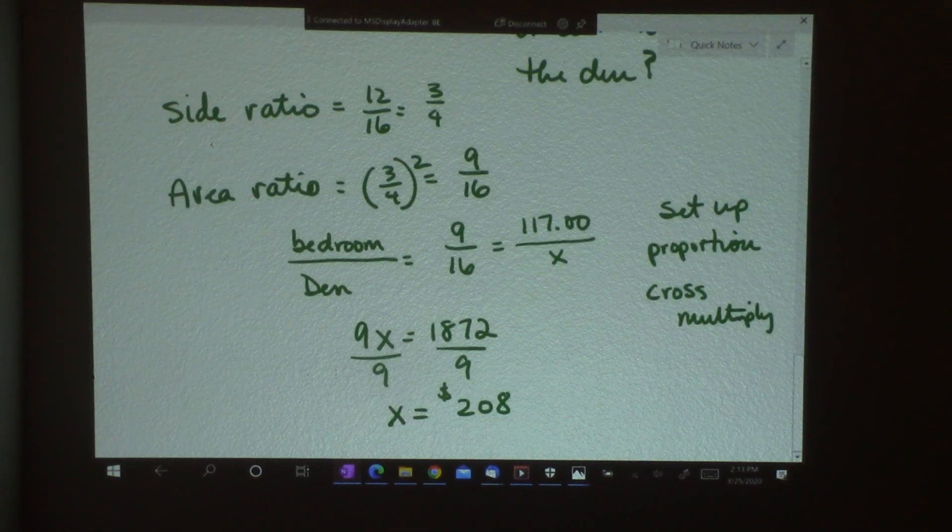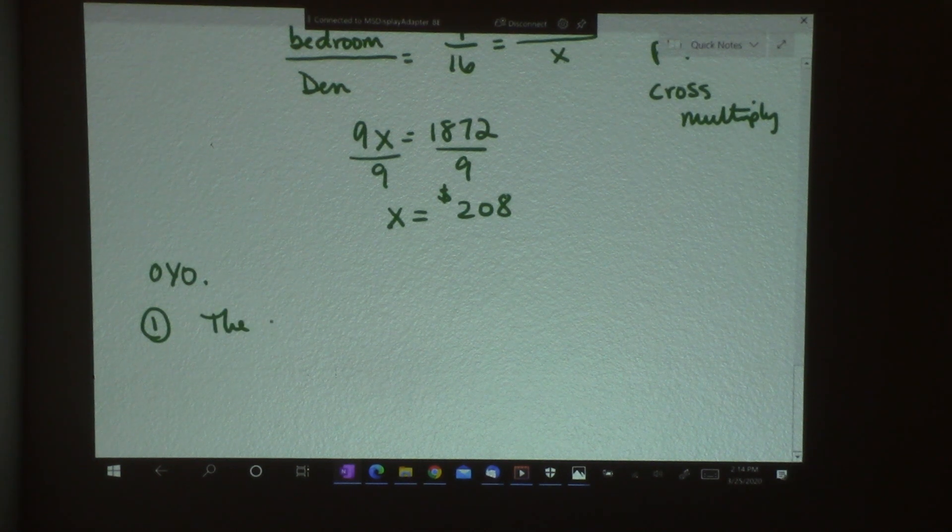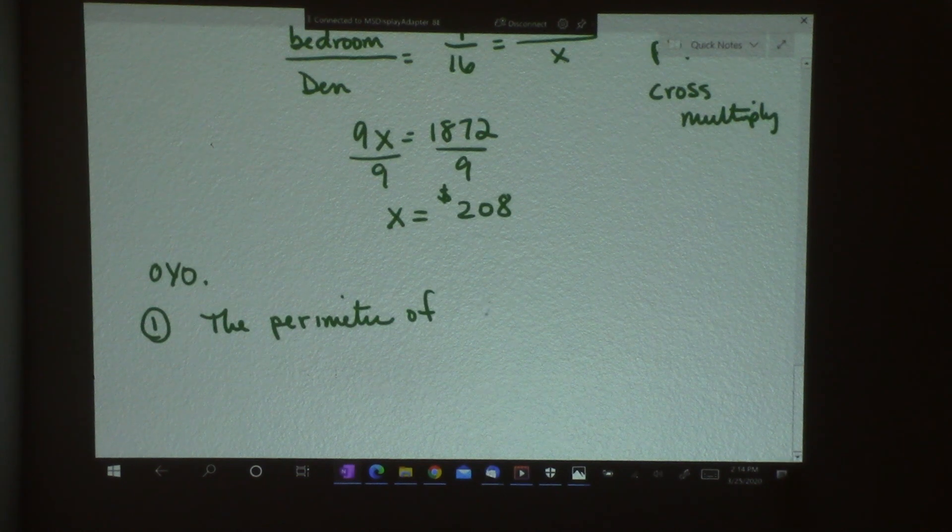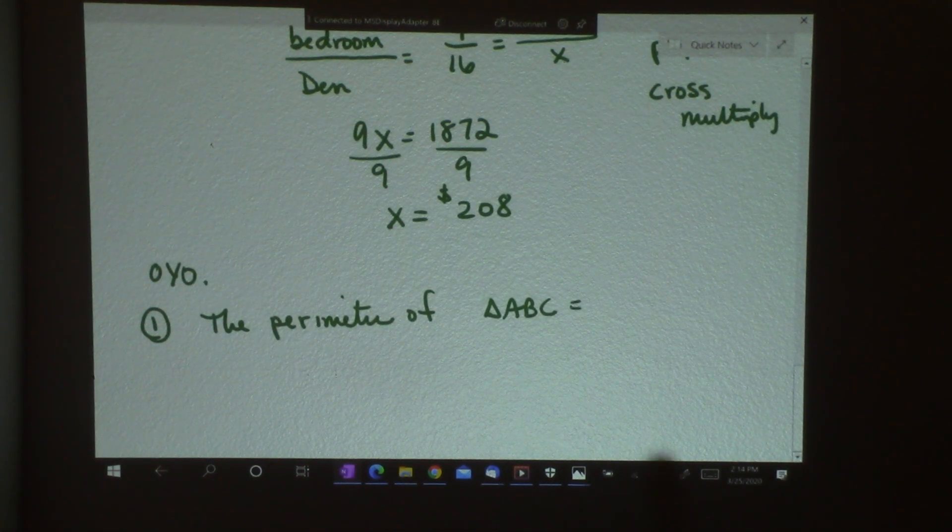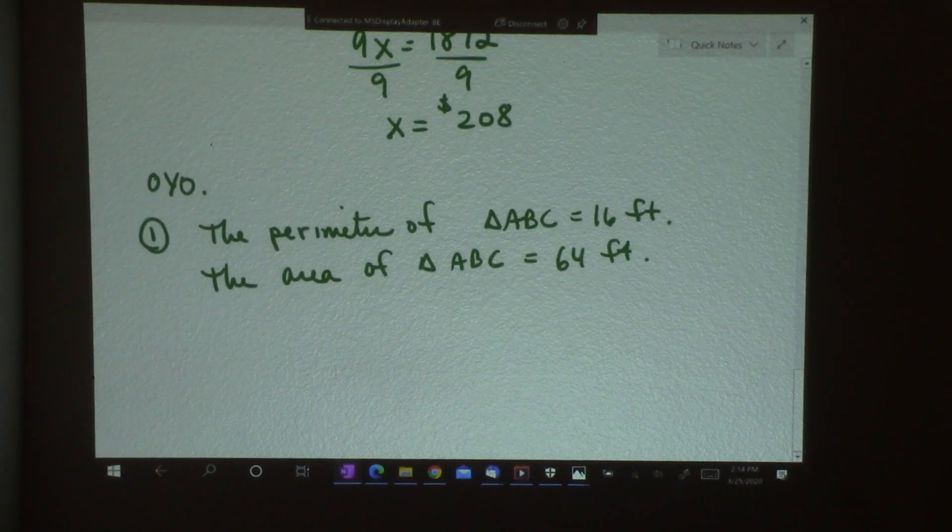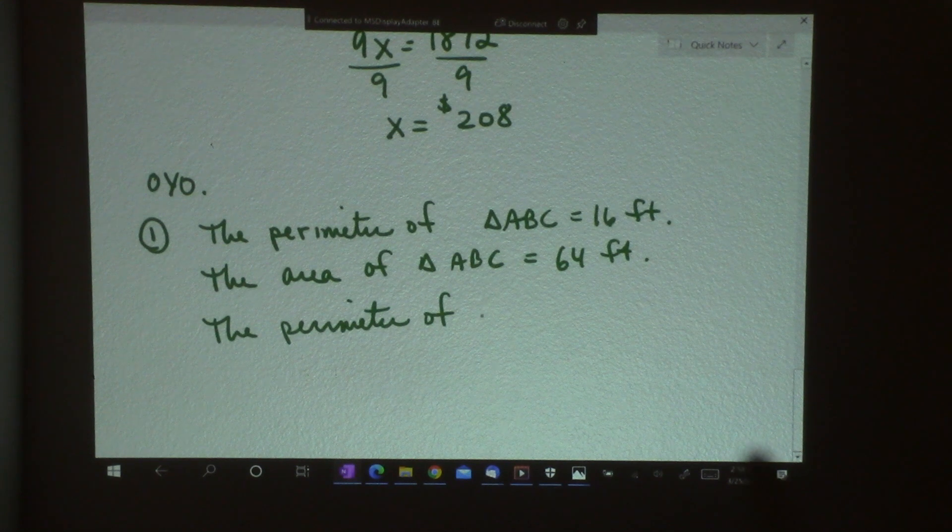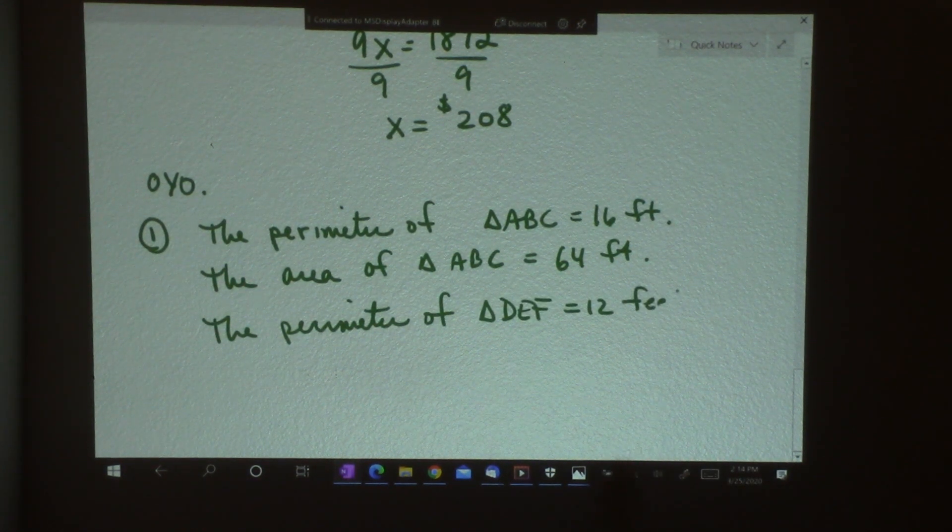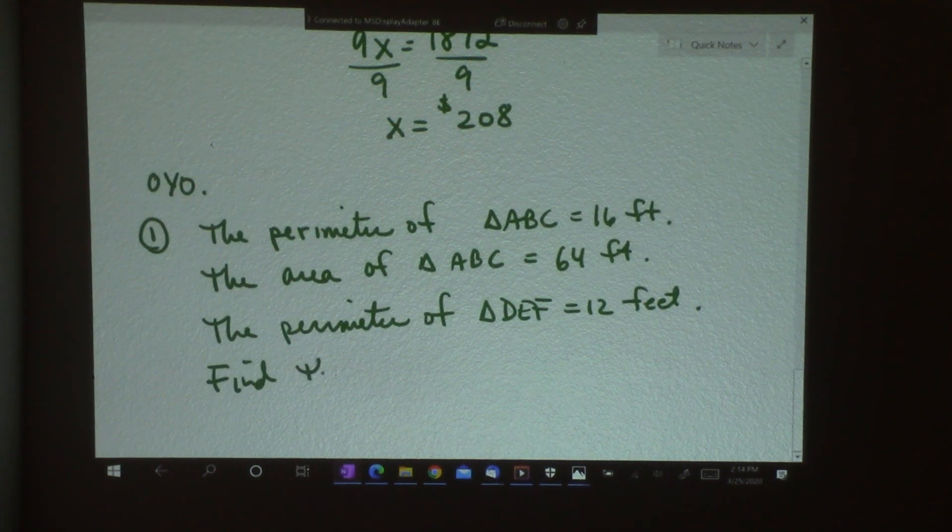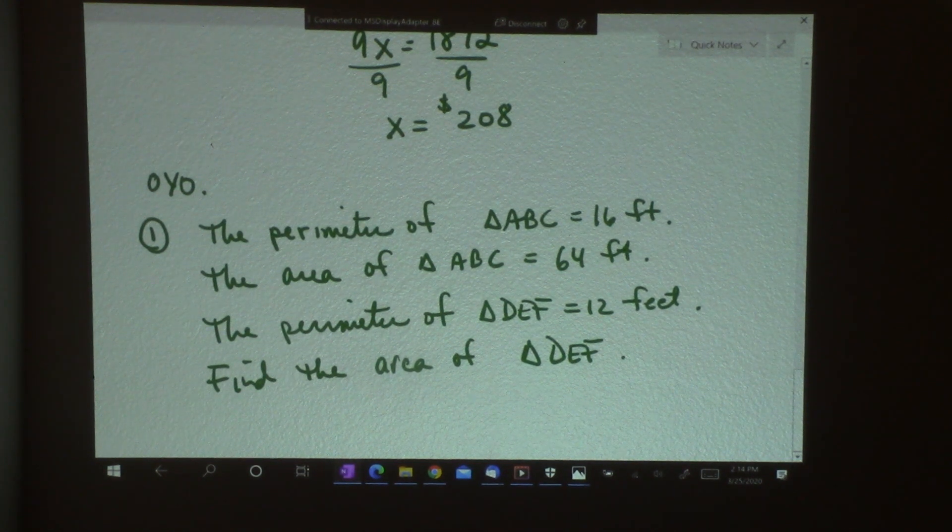Let's do number 3. No, I'm going to have you do some OYOs. So here you go. Number 1. The perimeter of triangle ABC is 16 feet. The area of triangle ABC is 64 feet. The perimeter of triangle DEF is 12 feet. Find the area of triangle DEF. Go ahead and do that one.